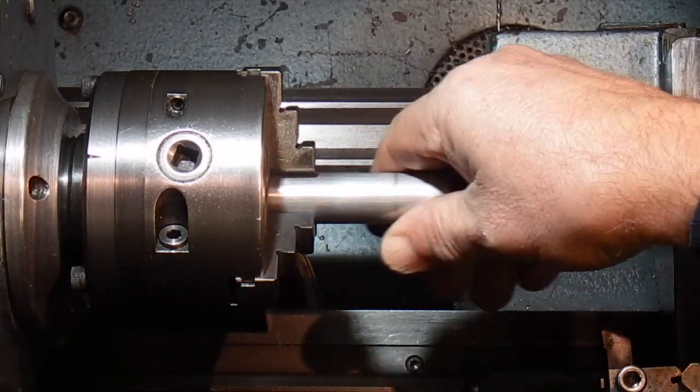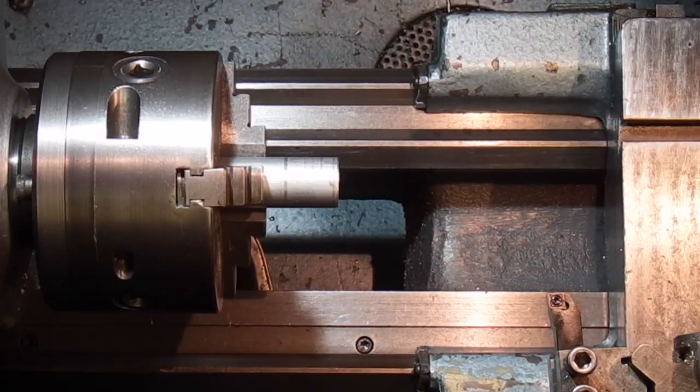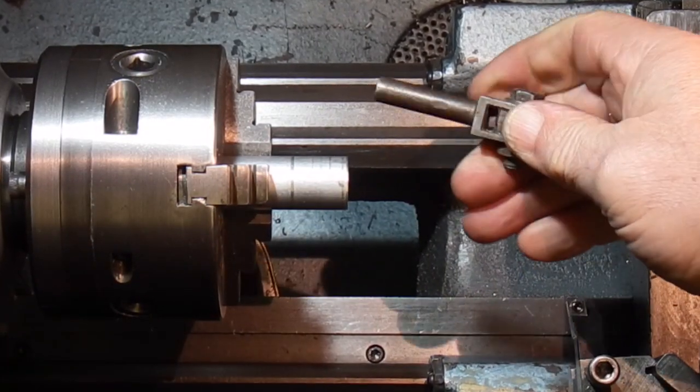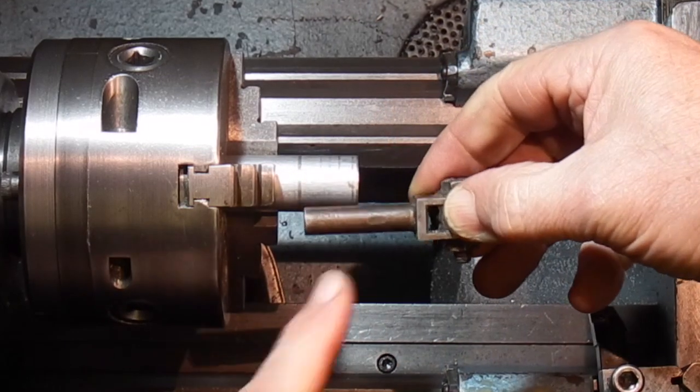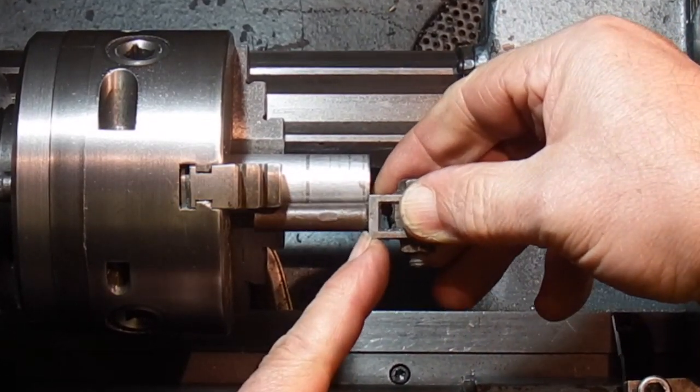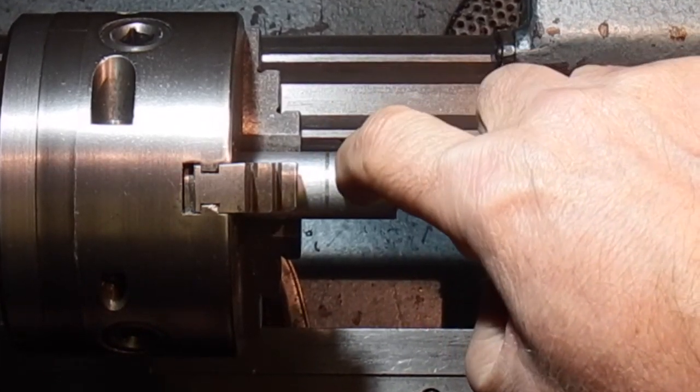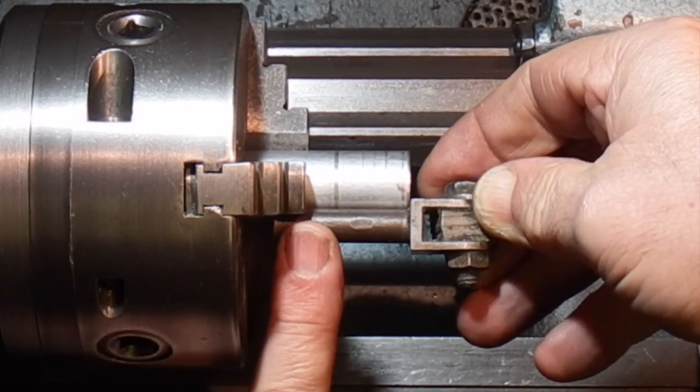Put this in the lathe that way. The first job is to face this off square, drill a hole that this will fit into so that the shank of this will go right into there, and then I'll drill a hole through the side and tap that so I can hold that in position.